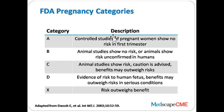Category B and C are probably the two most common you'll see. B would mean that animal studies showed no risk, or animal studies showed risk but we weren't able to confirm that risk in humans. Category C means animal studies show risk, caution is advised, and benefit may outweigh risk — basically, animal studies are showing risk and we might think there would be risk in humans. The difference is subtle but significant. A lot of this comes down to whether it simply hasn't been studied or wasn't studied at the time.